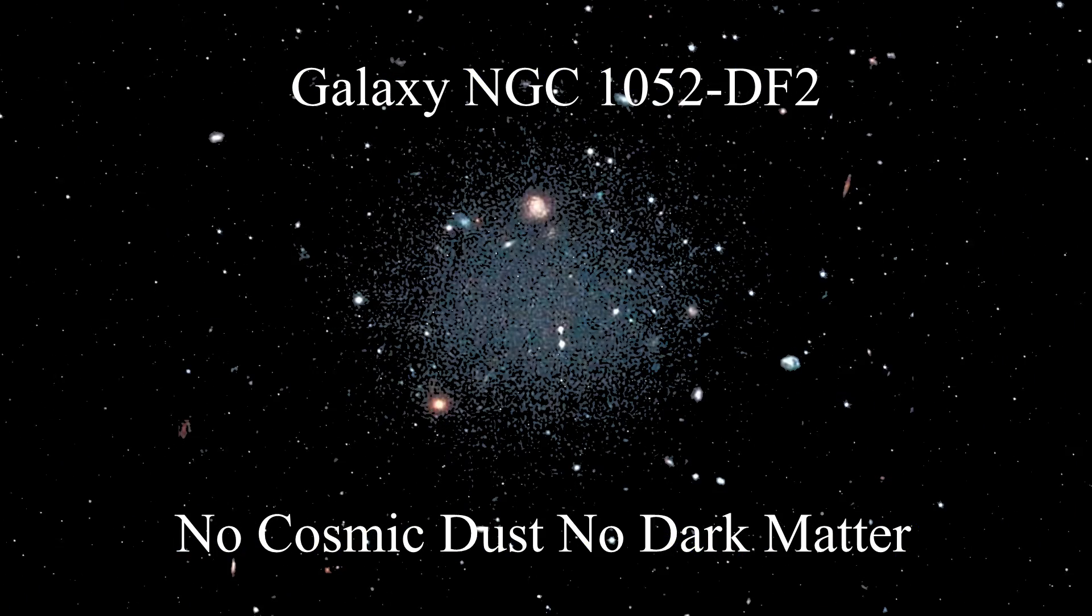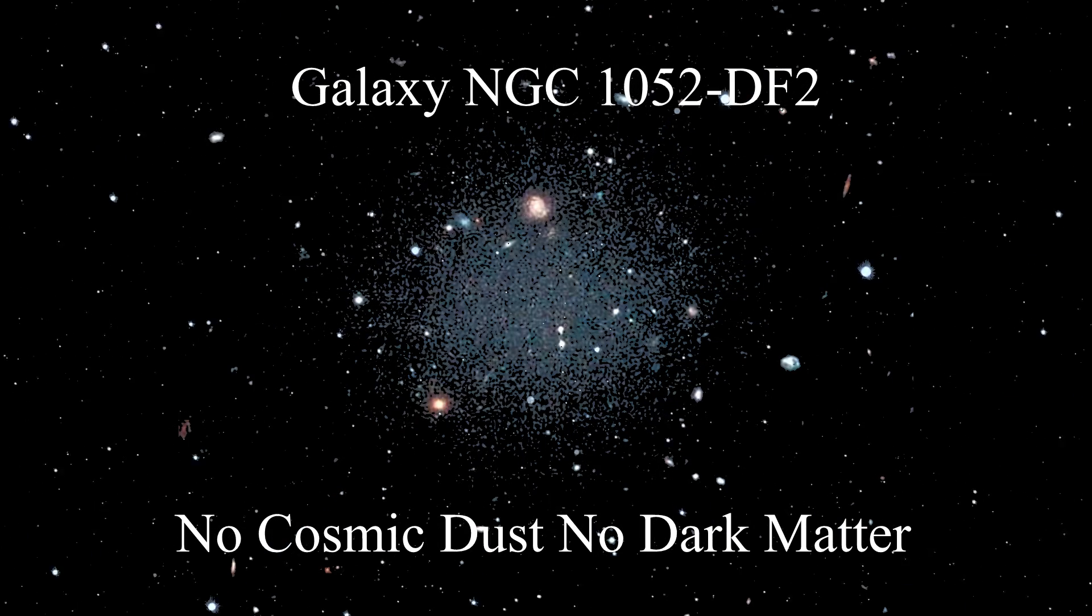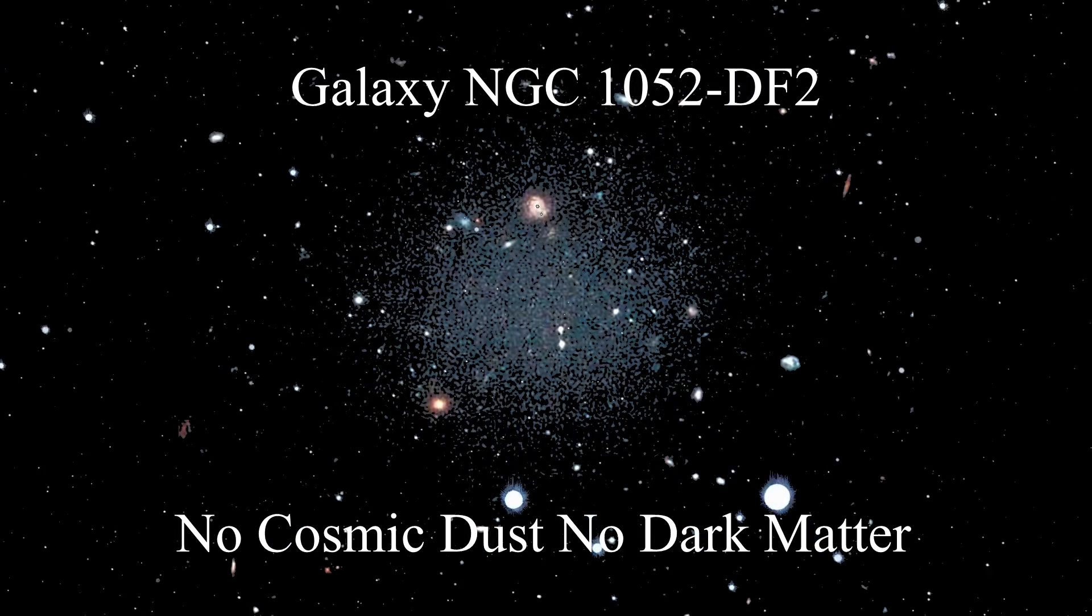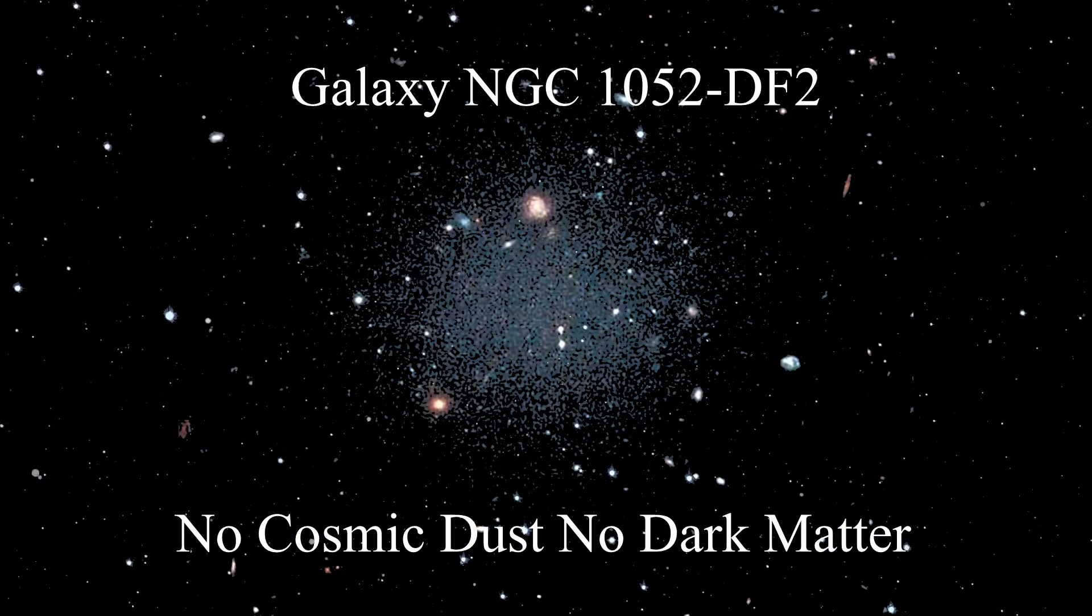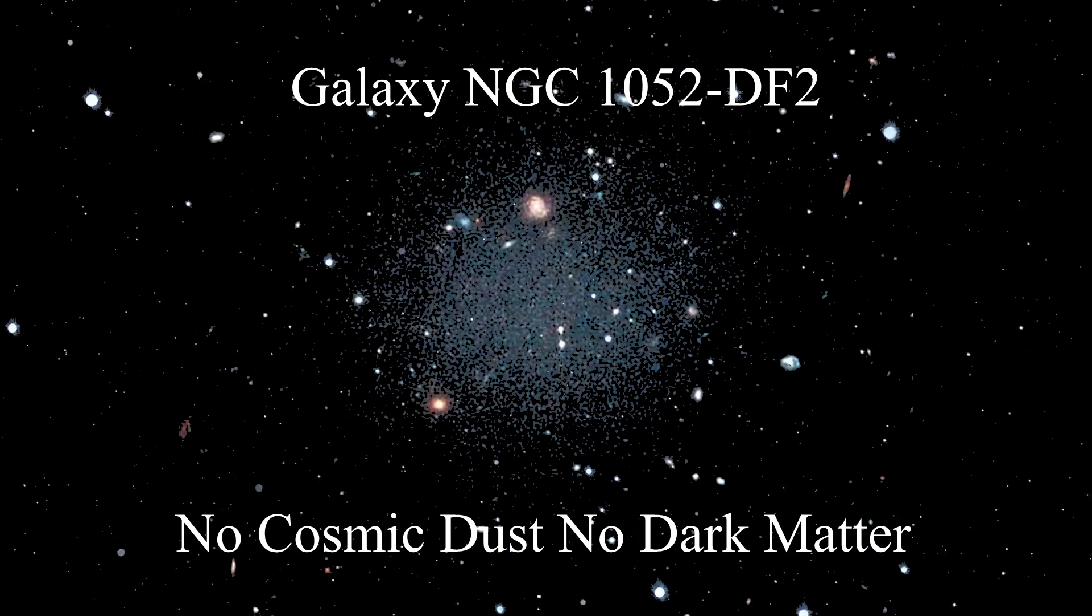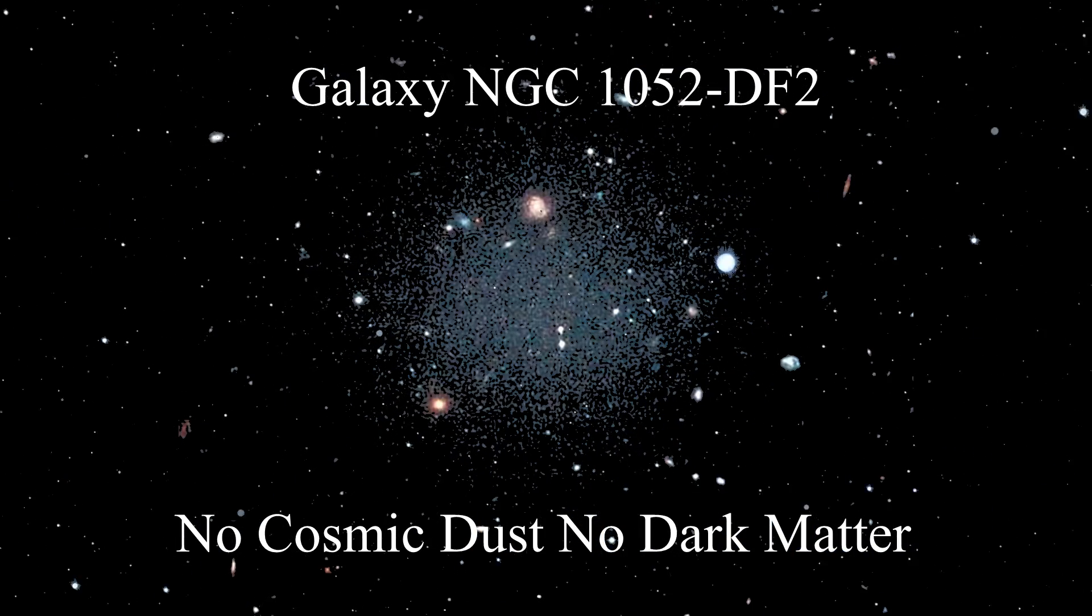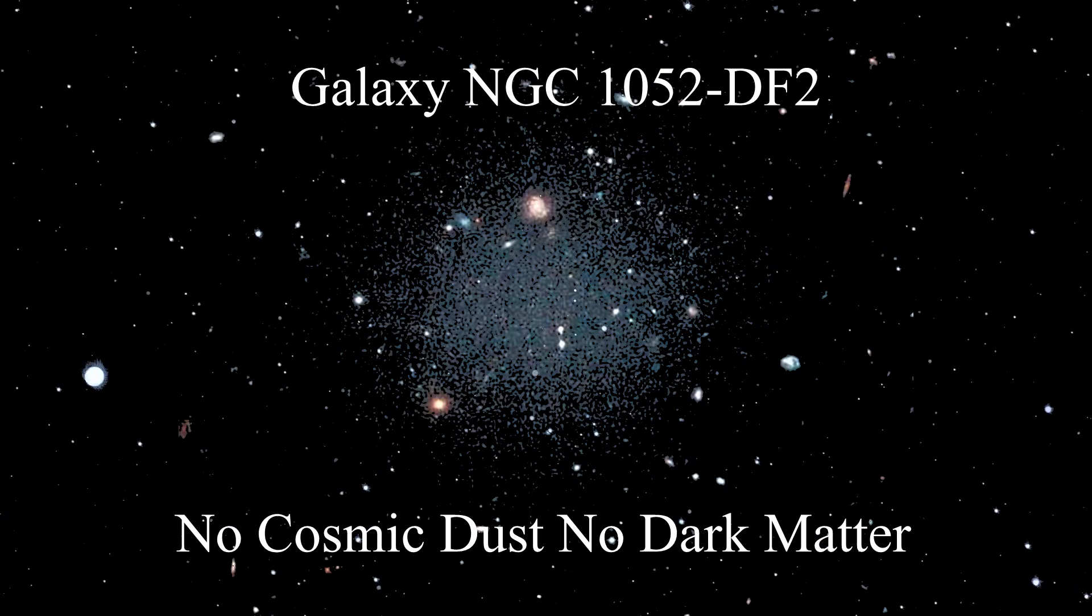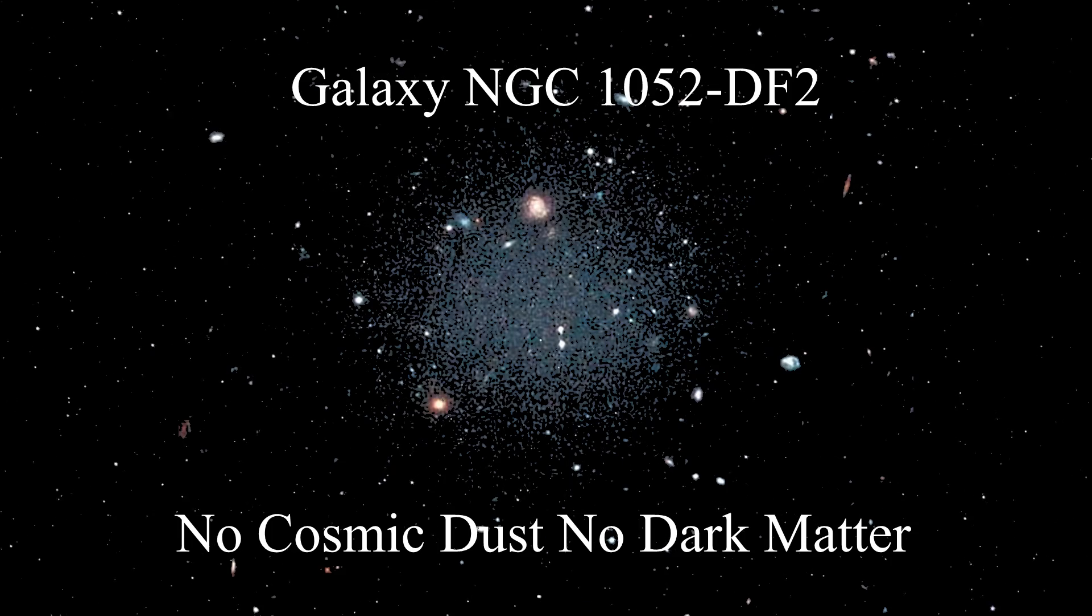As support for this theory, the Hubble Space Telescope has revealed a galaxy, NGC 1052, 72 million light-years from Earth, where one can literally see through to other galaxies behind it. It is an ultra-diffuse galaxy, almost as wide as the Milky Way, but contains only 1/200th of the number of stars in the Milky Way.